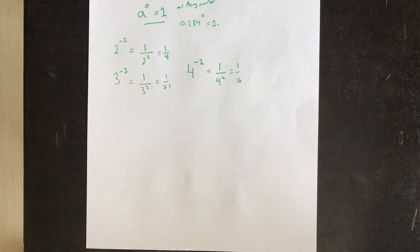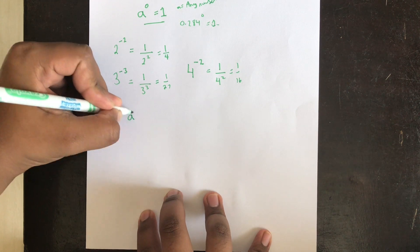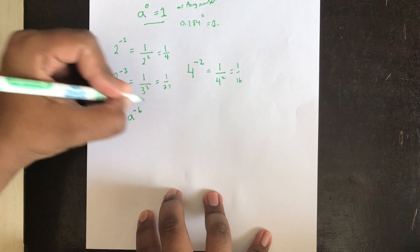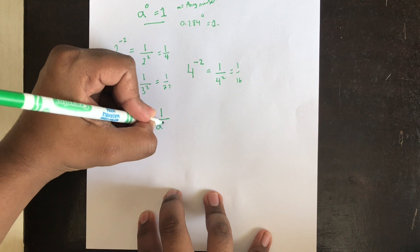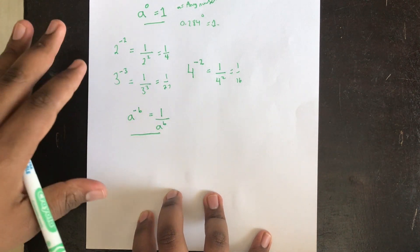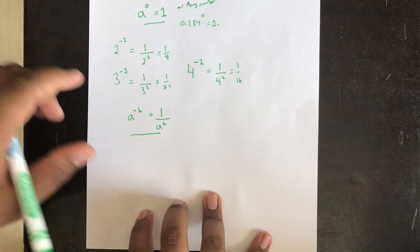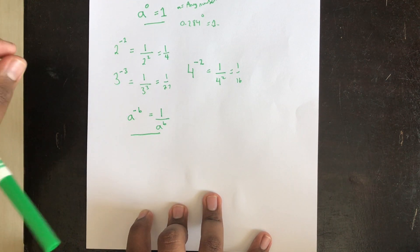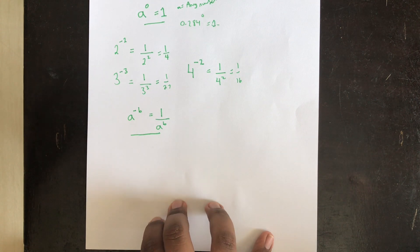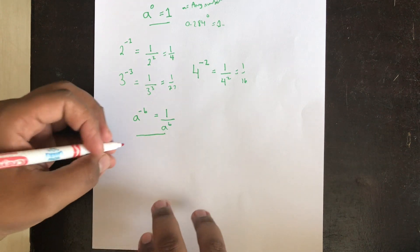The formula is: a to the power of negative b equals 1 over a power b. This is something to remember by definition — there's no straightforward derivation, so it's best to memorize and understand it.